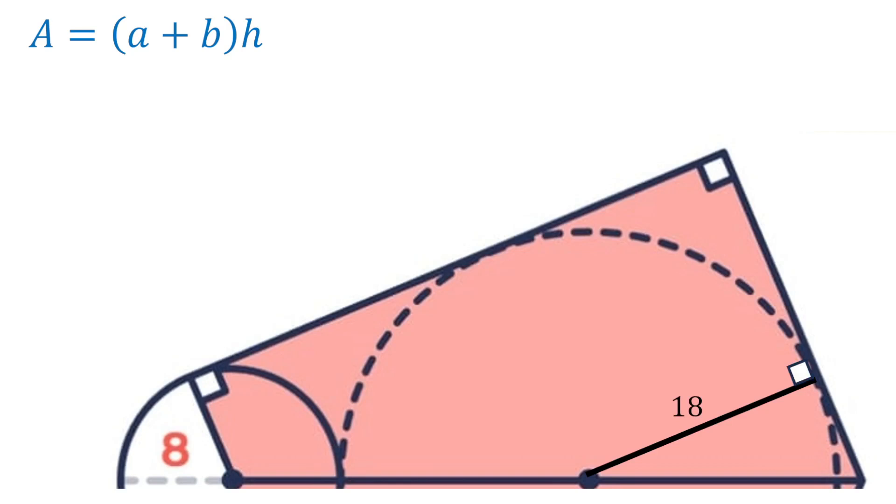That's going to be 90 degrees because the tangent is perpendicular to the radius at the point of tangency. Similarly, this is going to be 18 and that's going to be 90 degrees as well. Because those are all right angles, that means that all four sides will be 18 as well.